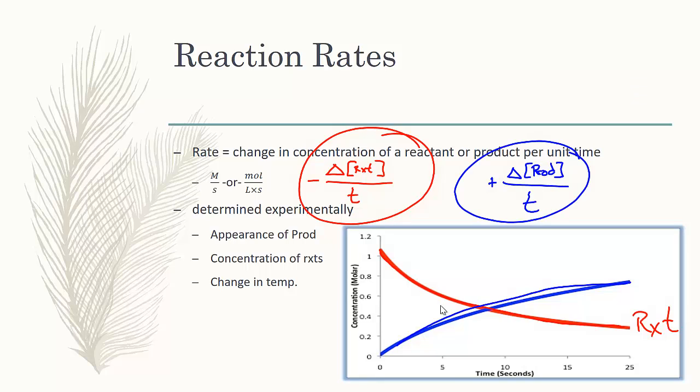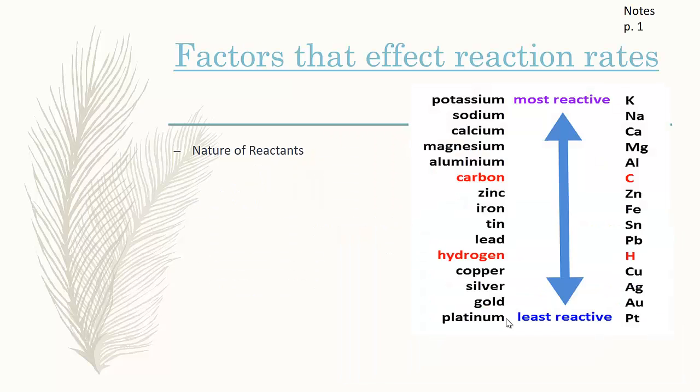This has to be done experimentally. I will often give you data or we will be doing a number of labs to look at the reaction rate. We can change how quickly a reaction occurs by changing the reactants. Some elements, some reactants are way more reactive than others. So changing the reactants themselves can speed up or slow down a reaction.